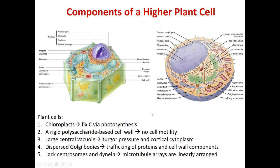Plant cells, of course, one of the distinguishing features is they are primary producers — they can fix carbon, taking carbon dioxide and fixing it to make simple carbohydrates. This takes place in the chloroplast, the chlorophyll-containing organelles, via the process of photosynthesis. The vast majority of this fixed carbon gets locked up as polysaccharides that make up the cell wall. You can think of the plant cell wall as one of the major sinks for the fixed carbon.